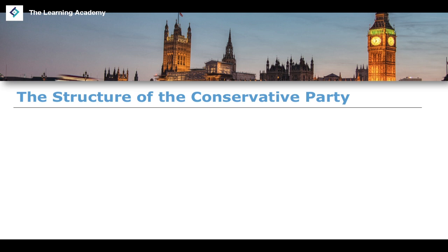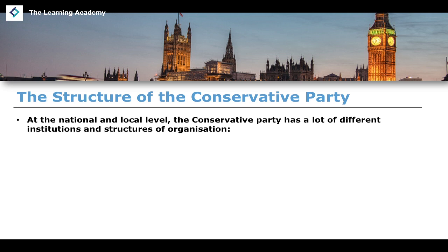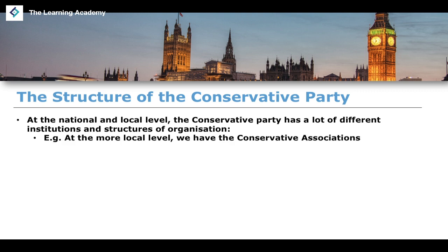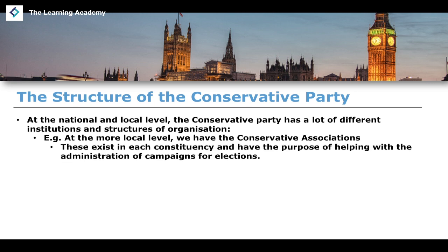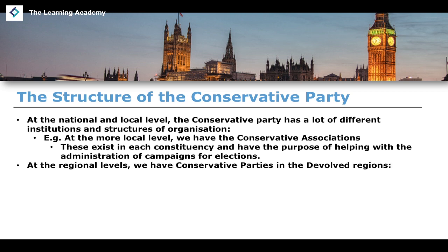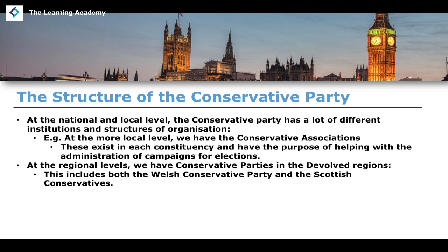Now let's look at the structure of the Conservative Party specifically. At the local level, we have Conservative Associations, which exist in each constituency and help with the administration of election campaigns — important for both by-elections and general elections. At a regional level, there are Conservative parties within devolved regions, including the Welsh Conservative Party and the Scottish Conservatives.